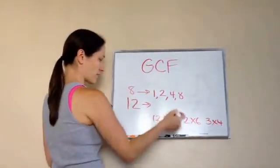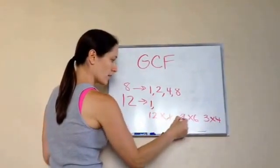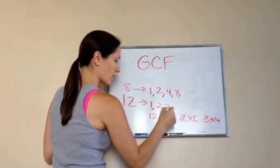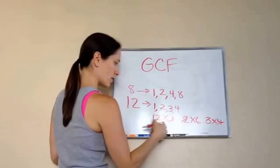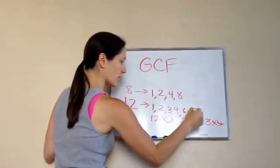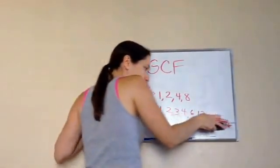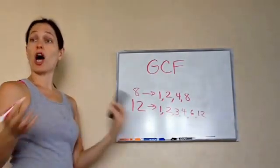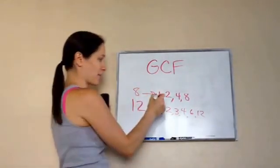Okay, so the factors for this one is 1, 2, 3, 4, 6, 12. Okay, great. Now, which ones are common, meaning which are the same in there?